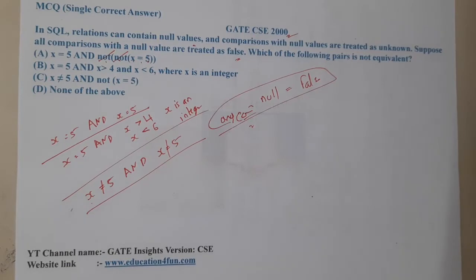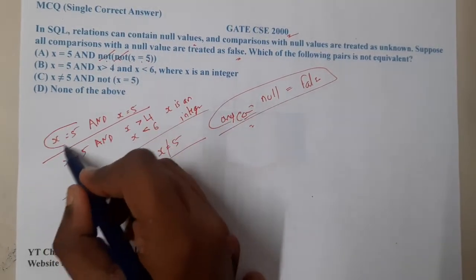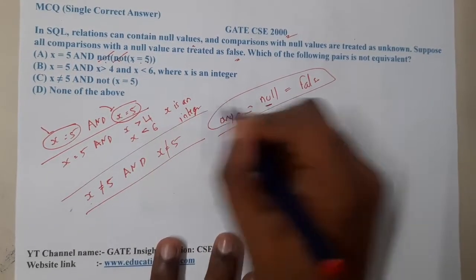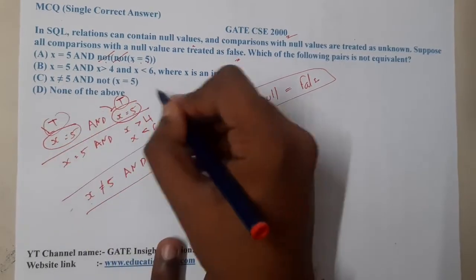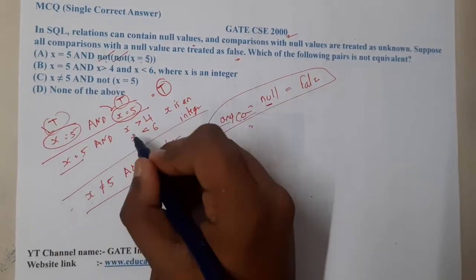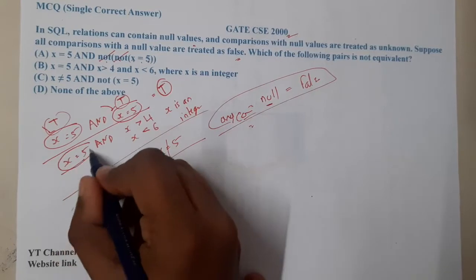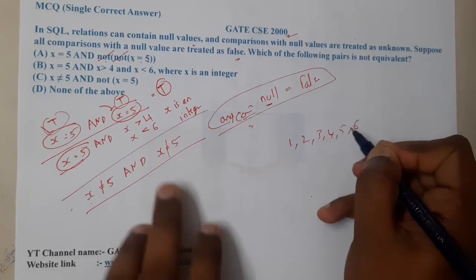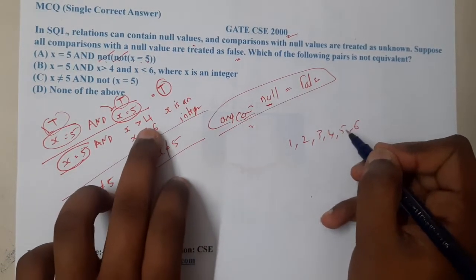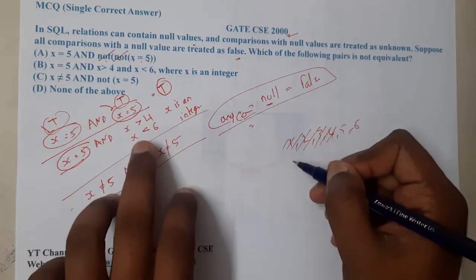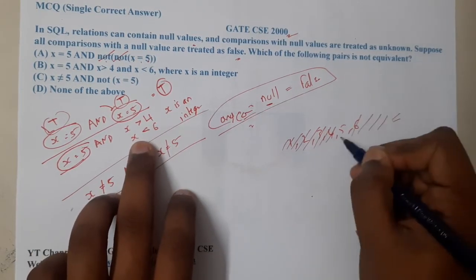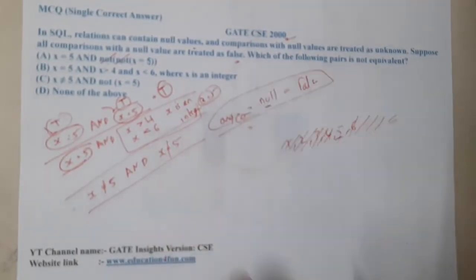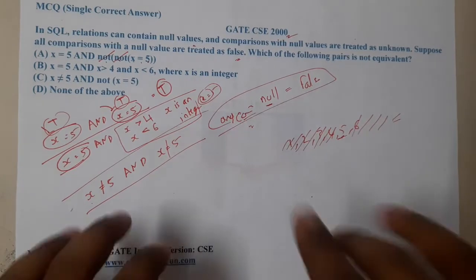In options A and B, we are 100% clearly saying the value of x is 5, so indirectly x is not null — both can be true. For option B, if x is an integer greater than 4 and less than 6, values like 1, 2, 3, 4, 6, 7 are excluded, leaving only x equal to 5. So there is no chance of x being null.